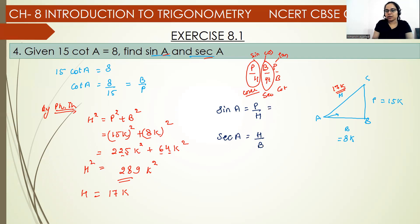Here we put perpendicular value as 15k and hypotenuse is 17k. When k cancels, the answer will be 15 upon 17. Similarly, hypotenuse is 17k and base is 8k. Again when k cancels, the answer will be 17 upon 8. And this is your required answer.